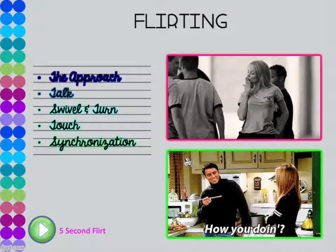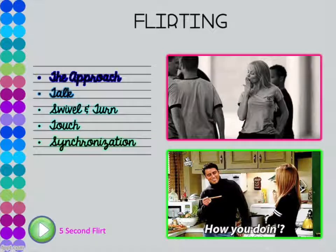For example, if we wanted to do observational research on the variable 'flirting,' research shows five components: the approach, talk, swivel and turn (where people start shoulder-to-shoulder then turn toward each other), touch (like touching someone on the arm — usually appearing accidental), and synchronization (where people deep into flirting start mimicking each other's body movements unconsciously, such as both touching their face).